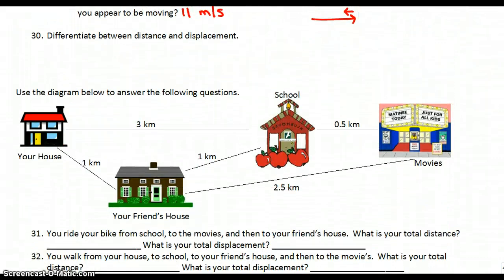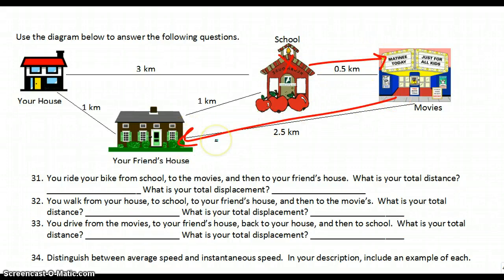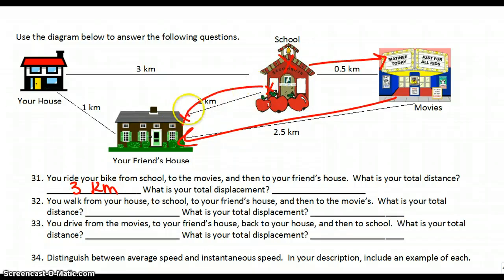Let's move down to the diagram for some more math-based ones. 31: you ride your bike from school to the movies, and then to your friend's house. What is your total distance? Remember, total distance is the length traveled. You went half a kilometer and then an additional two and a half kilometers, so if you add those together you get three kilometers. What is your total displacement? Your displacement is how far you are from your starting point. You started at the school and ended at your friend's house, so your displacement is one kilometer.